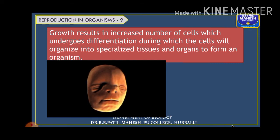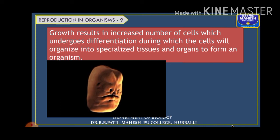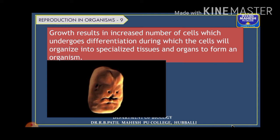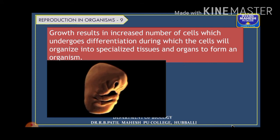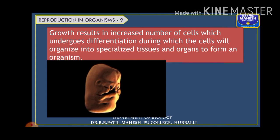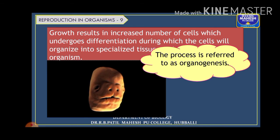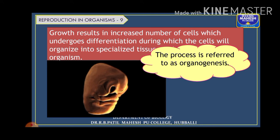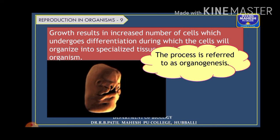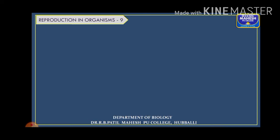As cell division continues, the cells start to differentiate into tissues and then into organs, forming the organism. This process of cells differentiating into tissues, organs, and then into the organism is referred to as organogenesis.